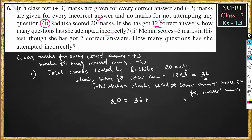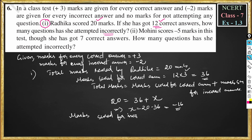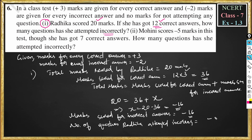Let marks scored for incorrect answers be x. So: 20 = 36 + x, which gives x = 20 − 36 = −16. So marks scored for incorrect answers = −16.